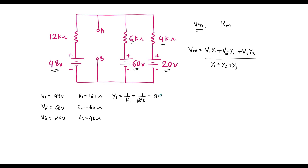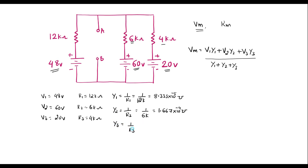Y1 = 1/12K = 8.333 × 10⁻⁵ mho. Similarly, Y2 = 1/R2 = 1/6K = 1.667 × 10⁻⁴ mho. The unit for conductance is mho, that is 1/R. Y3 = 1/R3 = 1/4K = 2.5 × 10⁻⁴ mho.